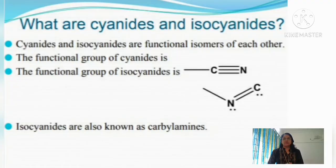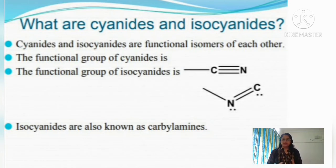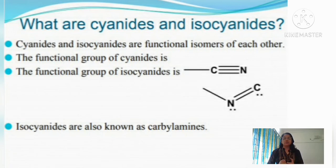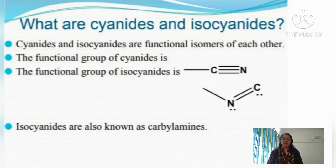Cyanide and isocyanides are functional isomers of each other — they have the same molecular formula but different functional groups. The functional group of cyanide is C≡N, meaning the aryl or alkyl group is attached through the carbon atom, while in isocyanide the functional group is N≡C, meaning the aryl or alkyl group is attached to the nitrogen atom. Isocyanides are otherwise called carbylamines.